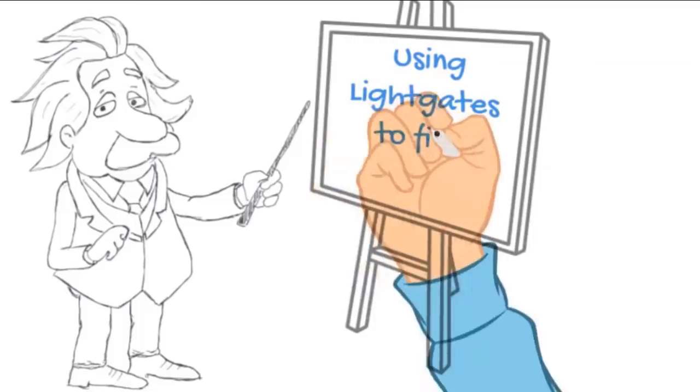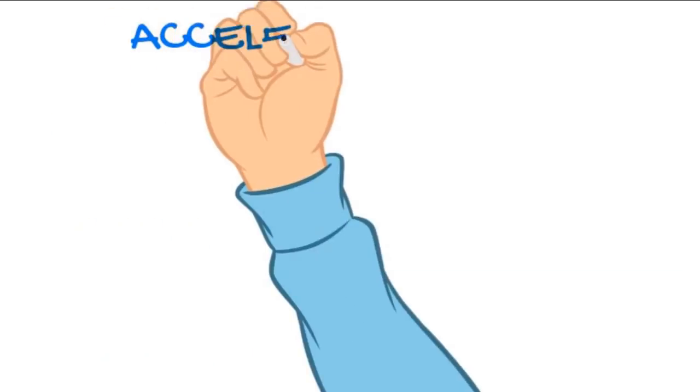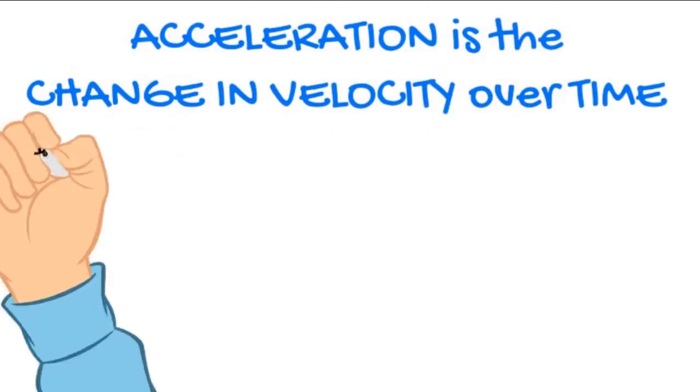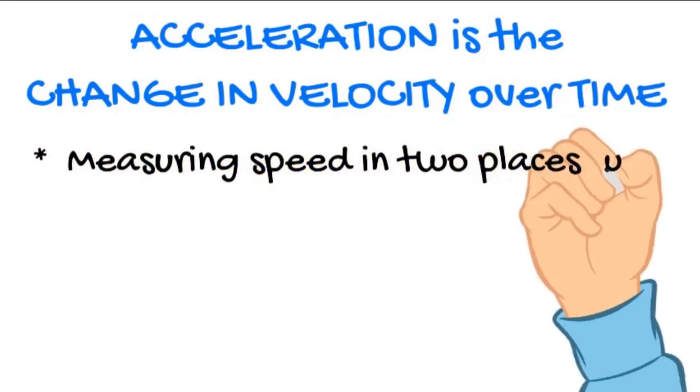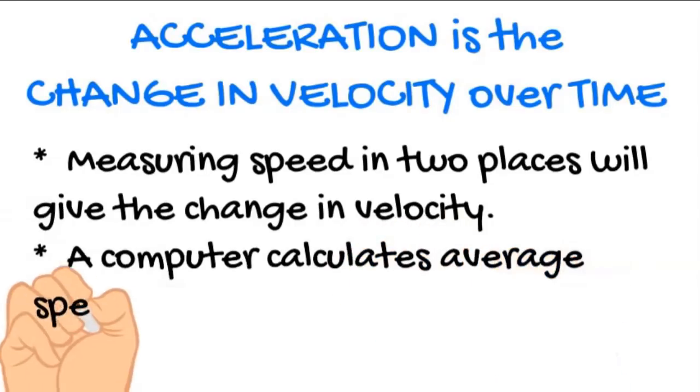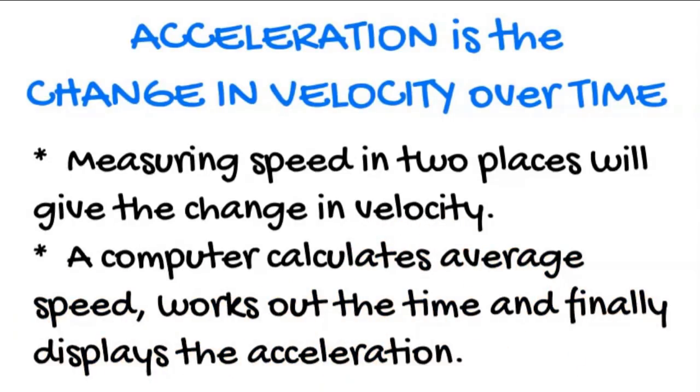Light gates can also be used to find acceleration. Measuring the speed in two places gives us the opportunity to calculate the change in velocity. A computer works out the average speed, the time, and finally displays the acceleration.